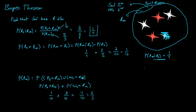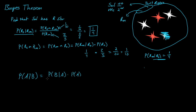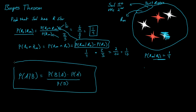Now, we solved this without even explicitly stating it — but we did use Bayes' Theorem. Bayes' Theorem is exactly what we did. We said the probability of event A given that event B has occurred, is equal to the probability of event B given that A has occurred, times the probability of A, all divided by the probability of B. That's exactly what we did, and this is Bayes' Theorem.